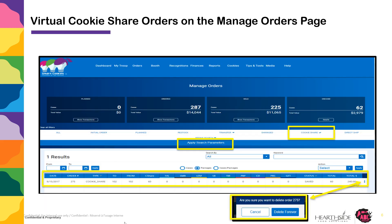If at a later time you need to search for the order, you can go to the Manage Orders page. Navigate in SmartCookies to Orders, Manage Orders. Filter for Cookie Share, and then click Apply Search Parameters. You will be able to see the date the order was entered, the order number, the type of order, cookie share, the troop number associated, and the amount of cookie share in packages.